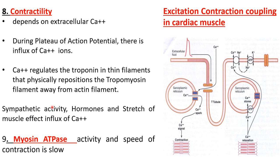Sympathetic nervous system activity, release of certain hormones, and stretch of the muscle by more blood within the ventricular chamber — these three factors affect the influx of calcium. If you increase the amount of calcium, contraction is better; if you decrease the amount of calcium entering the cell, contraction is weaker.